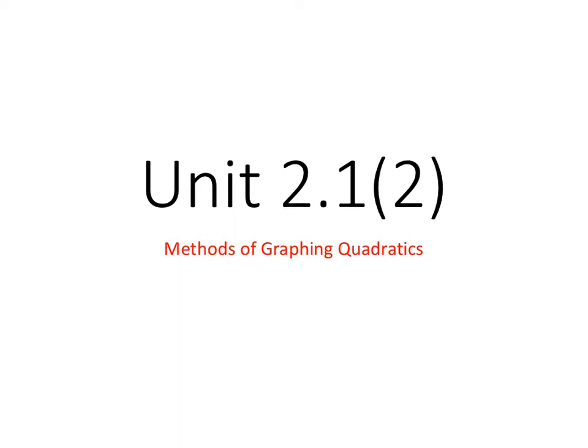Our video today is going to talk about Unit 2.1, Day 2: the methods of graphing quadratics. We found yesterday that one method for graphing quadratics was using a t-chart, just plugging in values and generating a table of values to find ordered pairs. But we'll find out that it's very inefficient and doesn't give us all the information, because in certain situations our graph won't be centered around the origin.